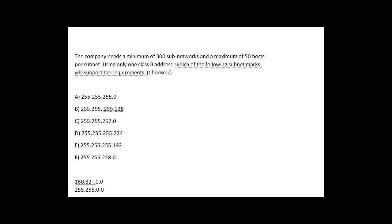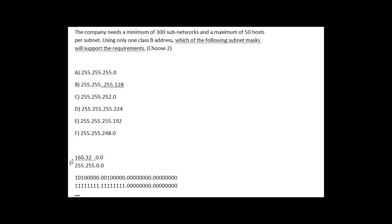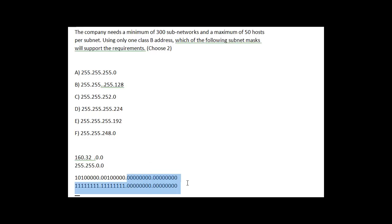Starting from that point, we break it down into binary. The top line is the binary for 160.32.0.0, and the bottom line is the subnet mask in binary. We're not going to deal with the first two octets — all we need to think about are the third and fourth octets. That's the part we're subnetting.